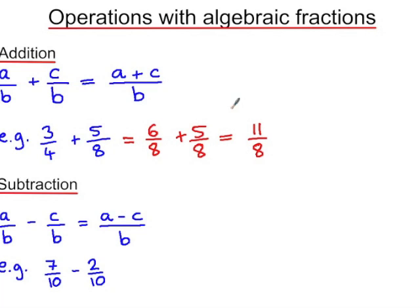Now the same applies with algebraic fractions. So if I'm adding together 2x over 7 and 3x over 7, the result is 2x plus 3x, which is 5x over 7.